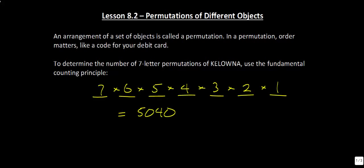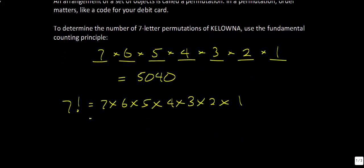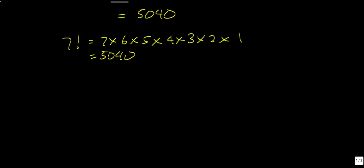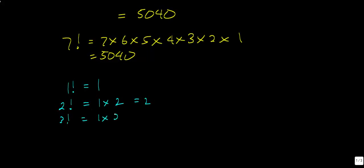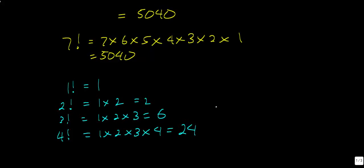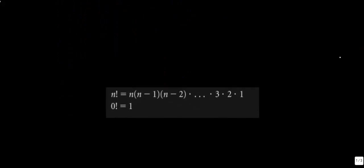An easier way to express seven times six times five times four times three times two times one is as seven factorial. Seven factorial equals 5040. This factorial notation will be used throughout this unit. In general: one factorial equals one, two factorial equals two, three factorial equals six, four factorial equals 24 — each time we multiply by one additional number.